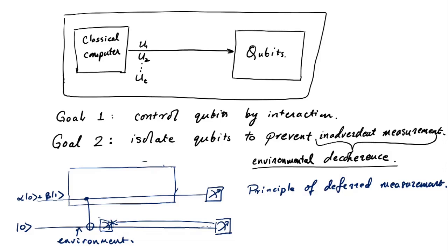Well, of course, you see outcome zero with probability alpha squared and one with probability beta squared. But of course, if you have outcome zero here on this environmental qubit because of the CNOT gate,